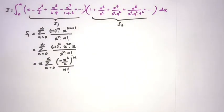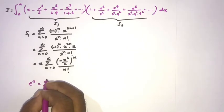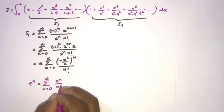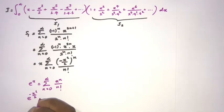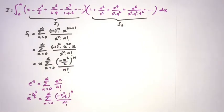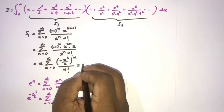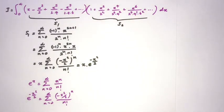This should look familiar — the power series for e^x is the sum from n=0 to infinity of x^n over n factorial. If we plug in (-x²/2), we get e^(-x²/2) equals the sum of (-x²/2)^n over n factorial. Therefore S1 equals x times e^(-x²/2).